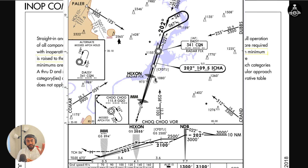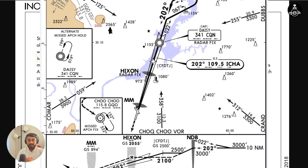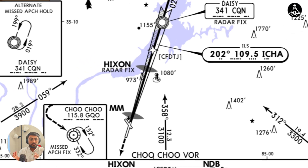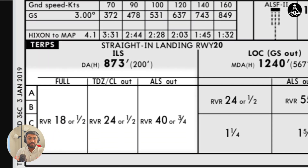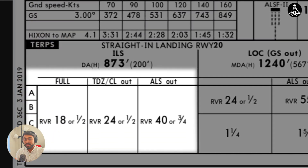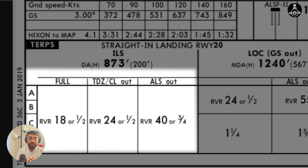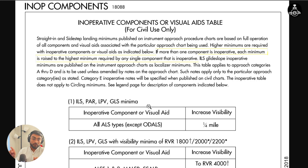Now, if we are using Jeppesen instrument plates, they provide the changes and variations within the particular instrument approach plate itself, but FAA approach plates do not have that. When you are using an FAA approach plate, you will be going to the inoperative components table and making changes to your minimums. Now let's read the inoperative components table first.